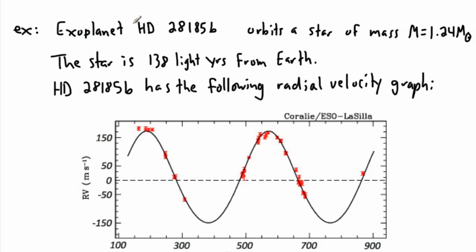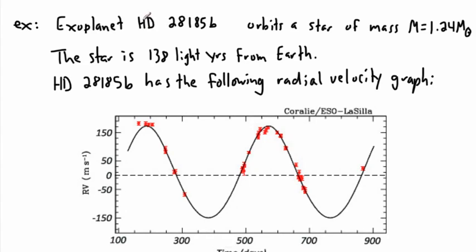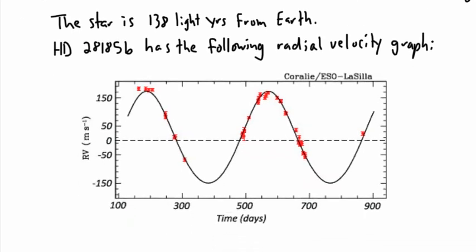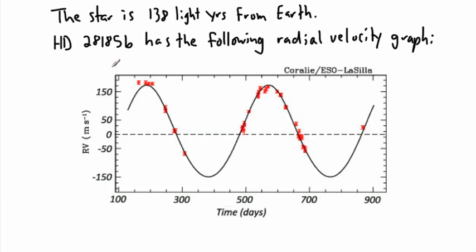This is an exoplanet called HD 28185 b. They're named after the star — HD 28185 — and the planet is just called b. This planet orbits the star HD 28185. The star's mass is 1.24 solar masses, and we know the star is 138 light years from Earth. This planet has the following radial velocity graph — taken from one of the actual papers — so this is real data. You can see the data points with their error bars fitting nicely to a sine curve.